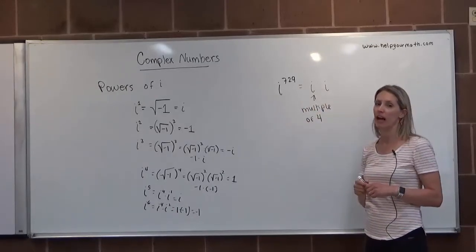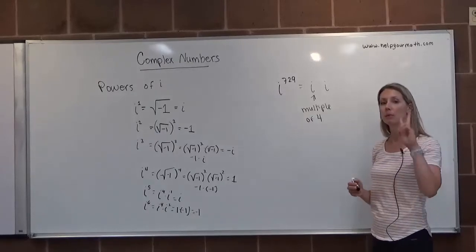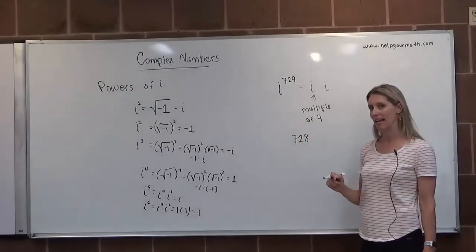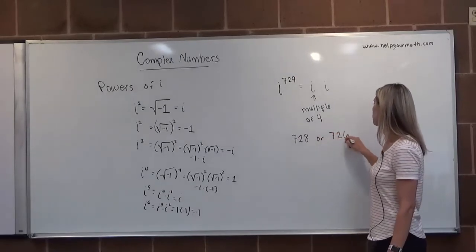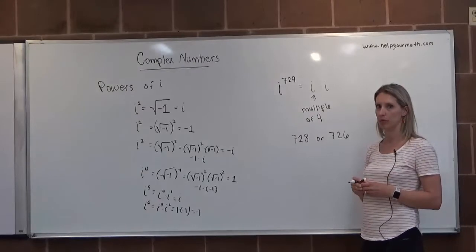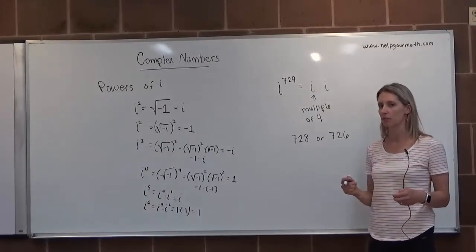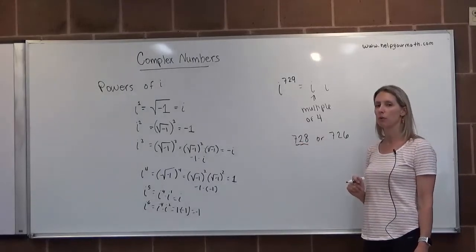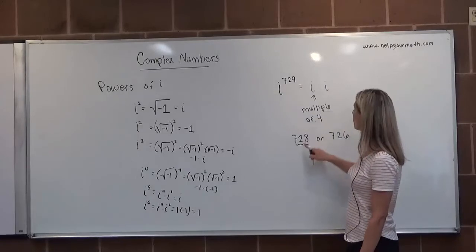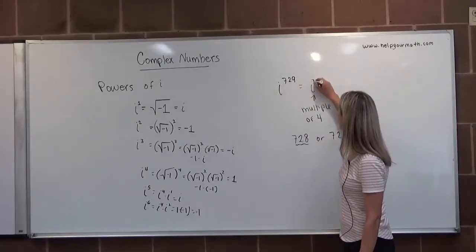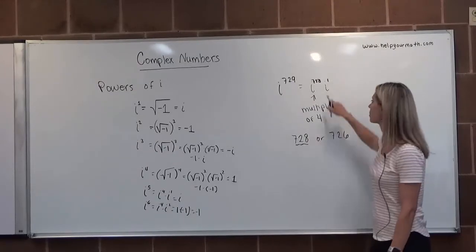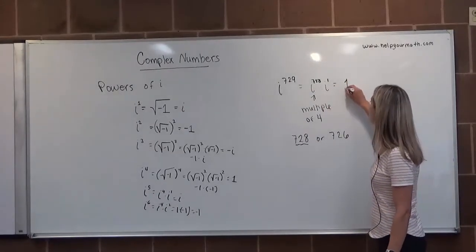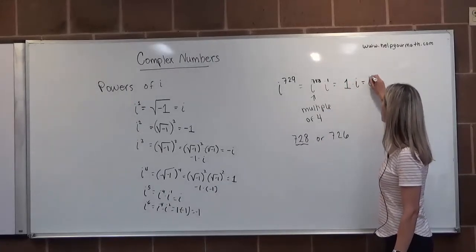4 doesn't go into 729 because 4 is even and even numbers only go into even numbers. So either 728 or 726 is the multiple of 4 closest to 729 — these are the only two even options within 4. The trick for knowing if something's a multiple of 4 is if the last two digits are a multiple of 4: 28 is, and 26 is not. So I'm going to rewrite i to the 729th as i to the 728th times i to the 1st. i to the 728th equals 1, and i to the 1st is i, so 1 times i is i. Therefore, i to the 729th equals i.